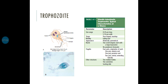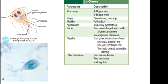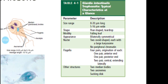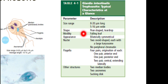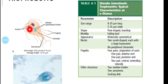The trophozoite of Giardia has a pear shape or tear-drop shape. It is motile and the motility resembles a falling leaf — revolving around its axis as it moves downward. The trophozoite is bilaterally symmetrical, meaning it can be divided into two identical portions.